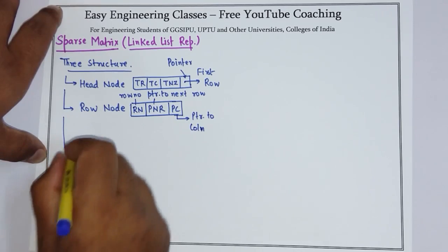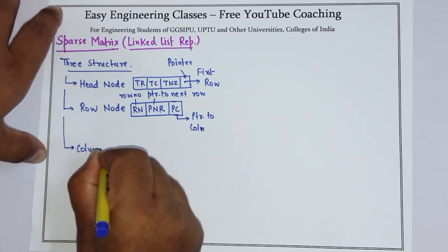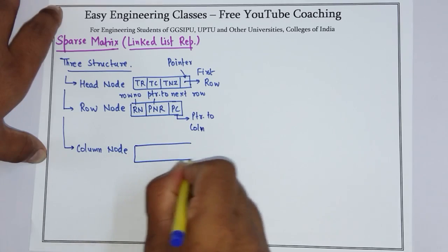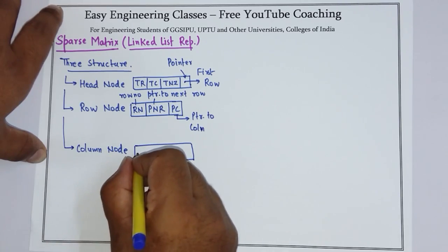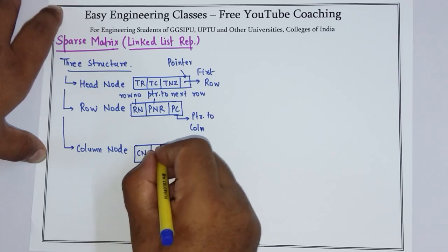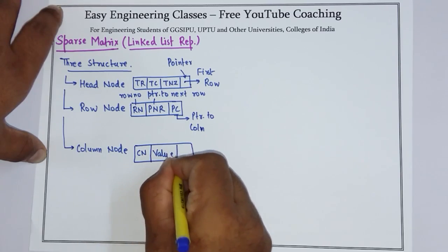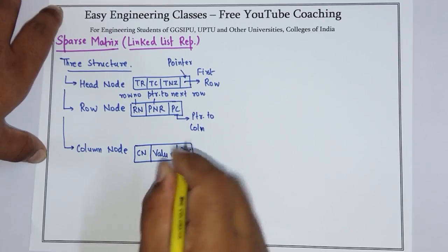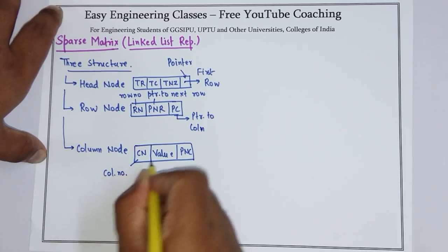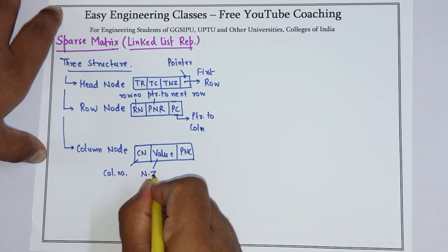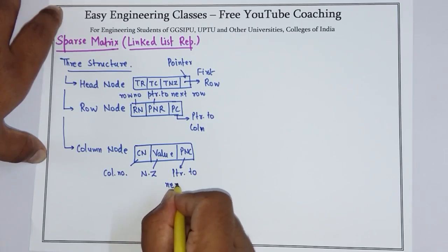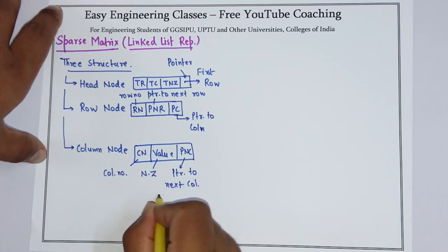The third structure is the column node. The column node also contains three values: first is the column number that has a nonzero value, then the value itself, and a pointer to the next column which also has a nonzero value. This is the column number, this is the nonzero value, and this is the pointer to the next column in the same row.